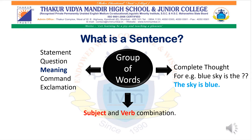Any particular sentence can be a command, can have an exclamation, can ask a question, or make a statement. That is what is known as a sentence — which helps us to get a complete thought and which has a combination of subject and verb, and also has a meaning.